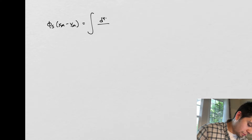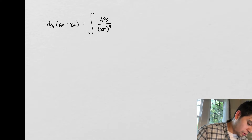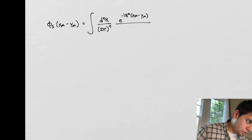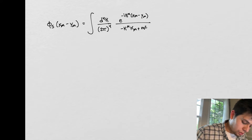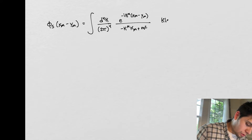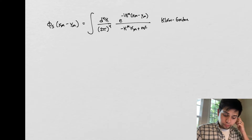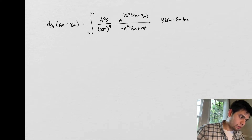In the case of the Klein-Gordon equation, they look like this: d^4 x, with E times minus i, K_mu times (X_mu minus Y_mu), over K^2 minus M squared. So this was for the Klein-Gordon case. For the Dirac case, they're going to look a little something like this.